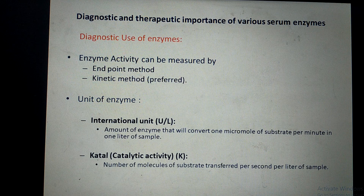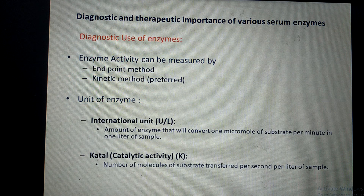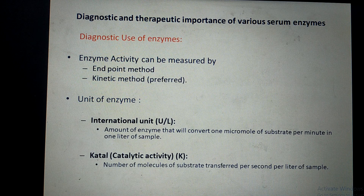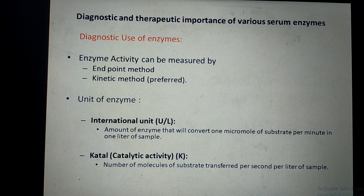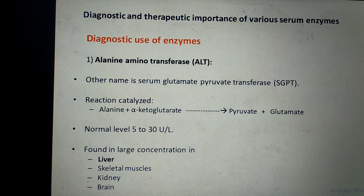Since we measure enzyme activity rather than concentration, there are two units used. The International Unit is defined as the amount of enzyme that will convert one micromole of substrate per minute per liter of sample. The Catalytic Unit (katal) is defined as the number of moles of substrate converted per second per liter of sample.